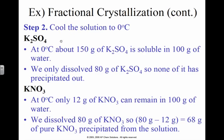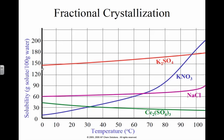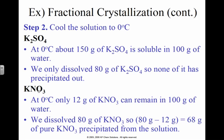Then if I cool the solution down to zero, what happens? The water's still holding almost all of the K2SO4, but not holding almost any of the KNO3. So at zero degrees, 150 grams of K2SO4 is soluble in 100 grams of water. We only dissolved 80 grams of K2SO4, so none of it has precipitated out.